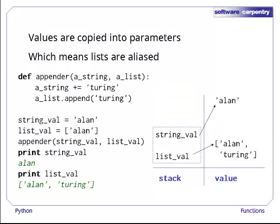Sure enough, when the function returns and the call frame is thrown away, the new string, Alan Turing, is lost because the only reference to it was in the stack frame. The change to the list, on the other hand, is kept because the function actually modified the list in place.